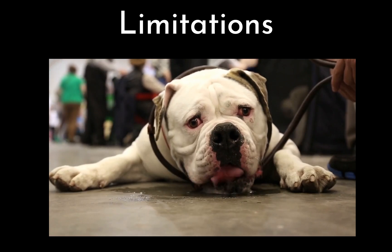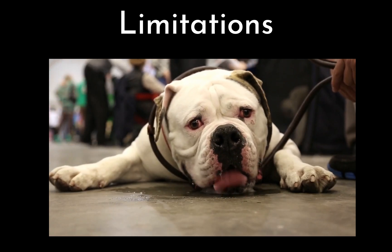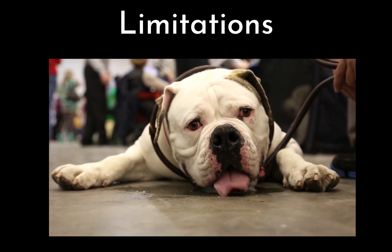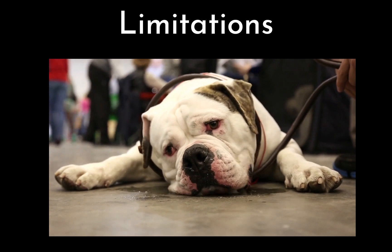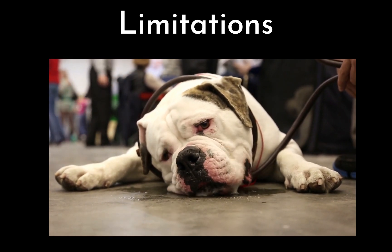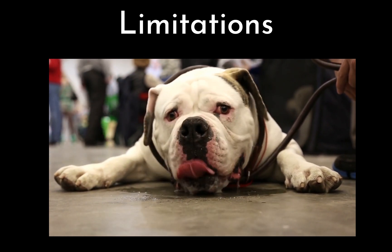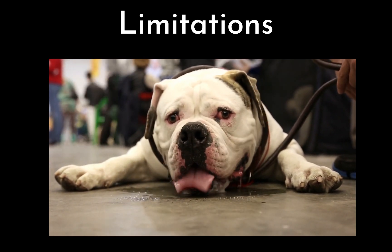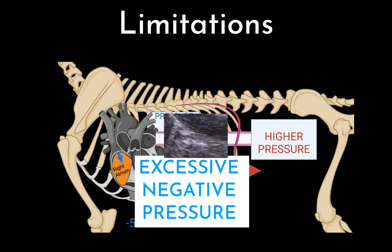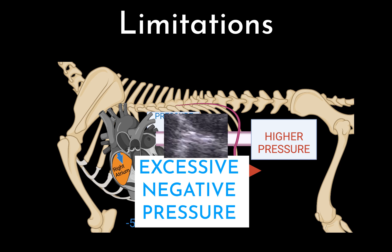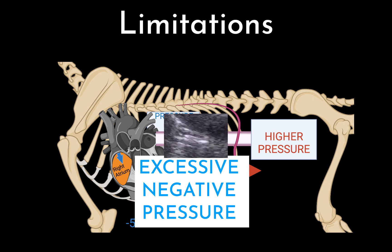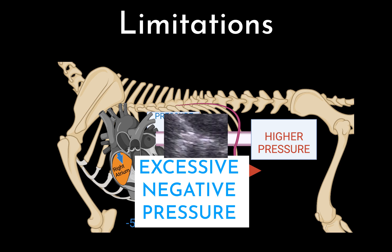Additionally, a patient in respiratory distress due to upper airway obstruction will generate very negative intrathoracic pressure. Since CVC collapse depends on the difference between intrathoracic and abdominal pressure, the majority of these patients will have CVC collapse regardless of their volume status.